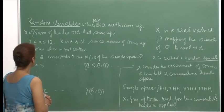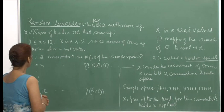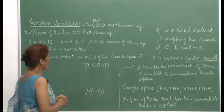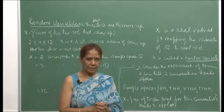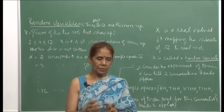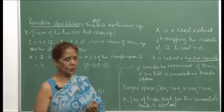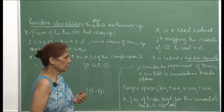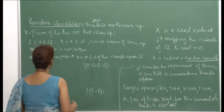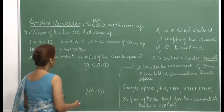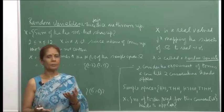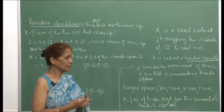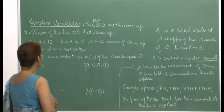We can see that the values of x will vary from 2 to 12. Since the outcome of tossing the 2 dice is not certain — that is a random phenomenon, because any face can show up — the value of x is dependent on the tossing and whatever the outcome. Therefore, this is what we mean by a random variable.